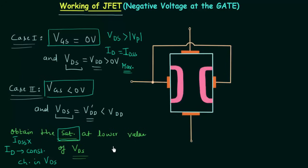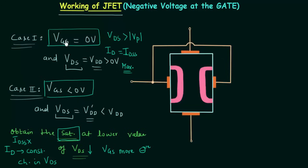Now let us see how we can obtain the saturation condition in case number two. VDS is smaller compared to case number one, and when VDS is smaller we need to make VGS more negative. We need to make VGS more negative in order to have the same width of depletion region as in case number one. In case number one we had a larger VDS and VGS equal to zero, but here VDS is smaller, so VGS must be more negative.